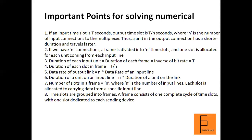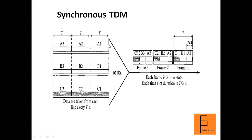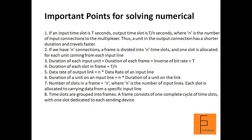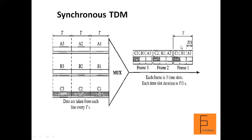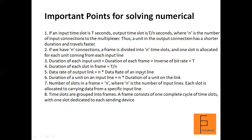The duration of each input unit is the same as the duration of each frame and is found by taking the inverse of the bit rate. Each input unit — A1, A2, B2, C3 — has a duration of T, and each frame also has a duration of T. The duration of each slot in the frame is T/N, where N is the number of input lines.